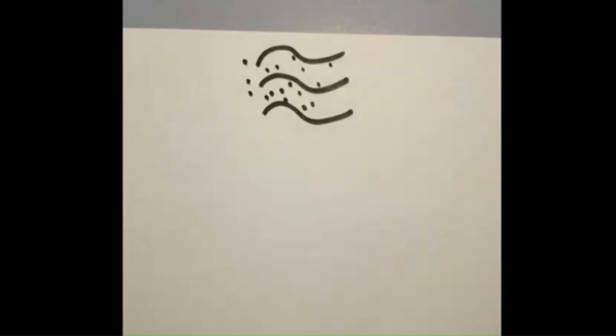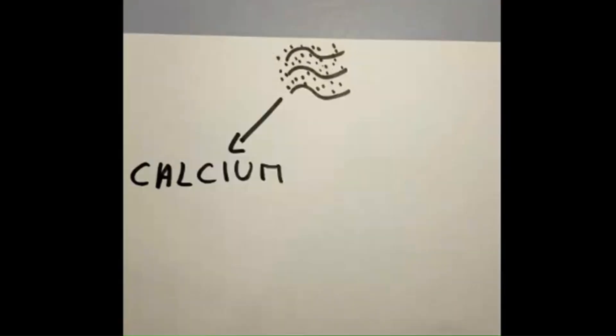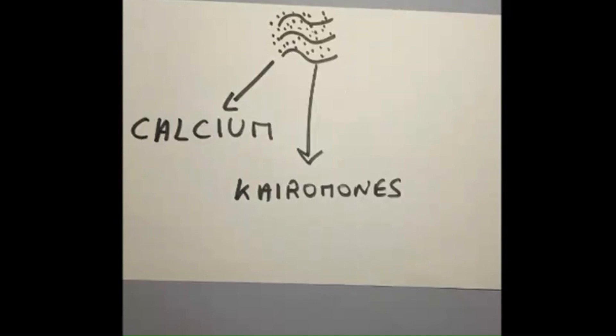The first parameter studied is chemical, in three terms: calcium, caromans, and salinity.